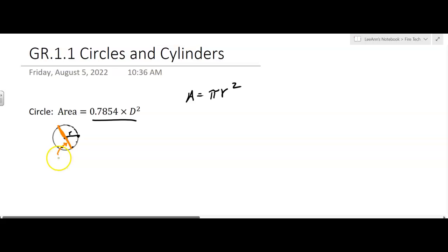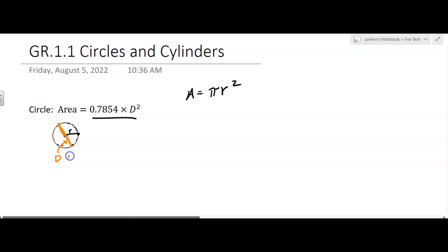Now in this case, they're going to use an uppercase D for diameter. The diameter is equal to 2 times the radii, 2r.